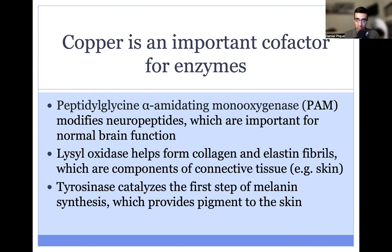Why do we even need copper? It's an important cofactor for dozens of enzymes in the body. In particular, three of those enzymes include PAM, which helps modify neuropeptides important for normal brain functioning; lysyl oxidase, which helps form collagen and elastin fibrils that are components of connective tissue such as the skin; and tyrosinase, which is an enzyme that catalyzes the first step of melanin synthesis, providing pigment to the skin.